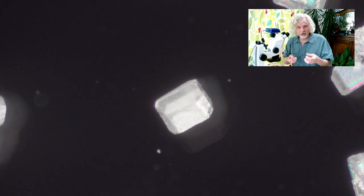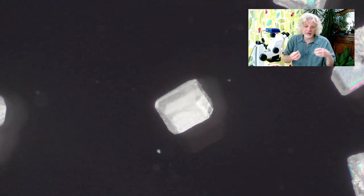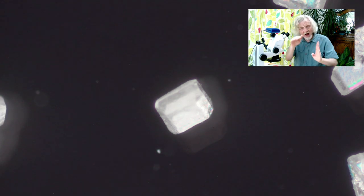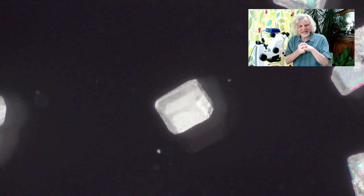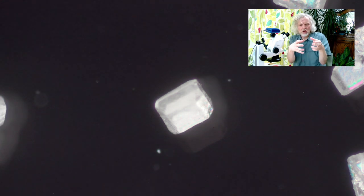So salt is a fairly simple chemical structure. It's sodium chloride. It's got sodium atoms and chloride atoms. And they arrange themselves in a very neat, rigid, sort of cubic array. And the crystal structure is called face-centered cubic. And that results in cubic crystals. When the crystals grow, they're kind of cubic.